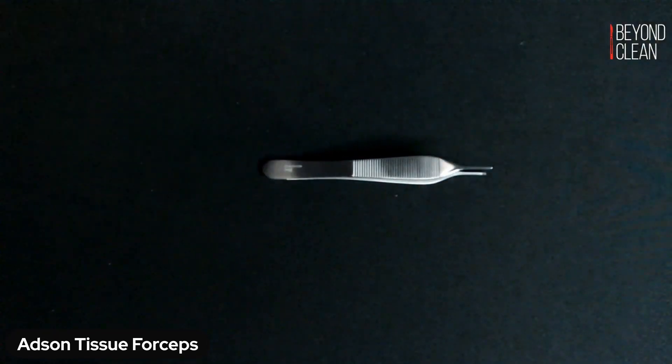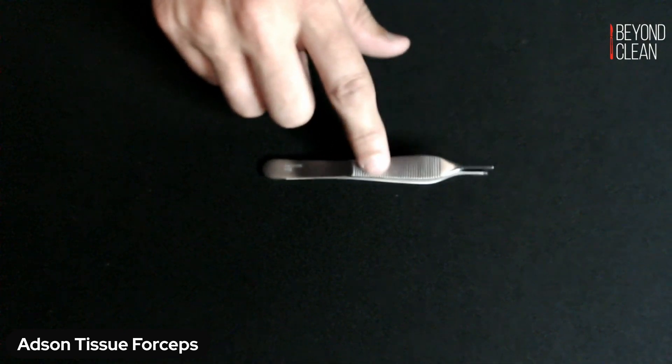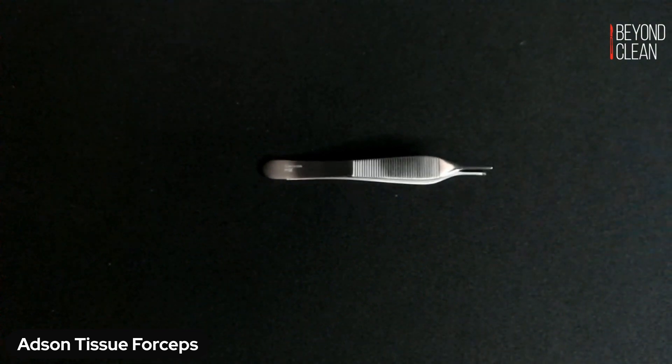All right. So that's the Adson tissue forceps. The only other thing to mention about this is you do want to check those serrations on the handle to make sure that they're clean and clear of any debris.